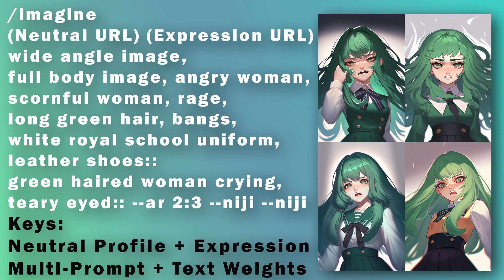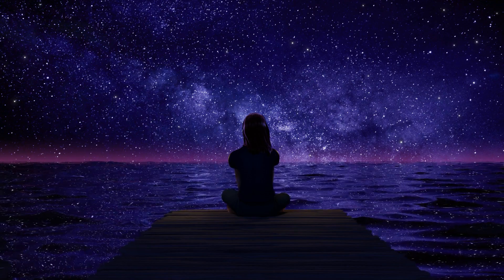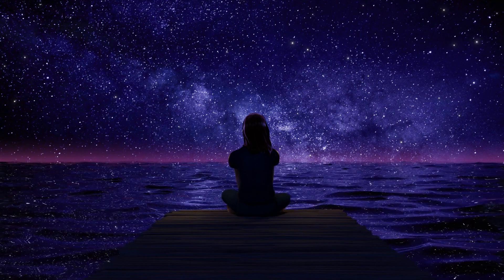Another thing I did here is add text weights. I combined an angry description with crying and teary-eyed. The text weights use double colons — it determines how much emphasis Midjourney puts on something. With double colons it has a text weight of one, putting equal emphasis on the prompt describing a wide-angle full-body angry woman through to a green-haired woman crying and teary-eyed. That produced really expressive characters and I'd say this is the easiest way to do this. I hope that was a quick and easy way to add expressions to your character — leave a comment if you need clarification, and have a great rest of your day.